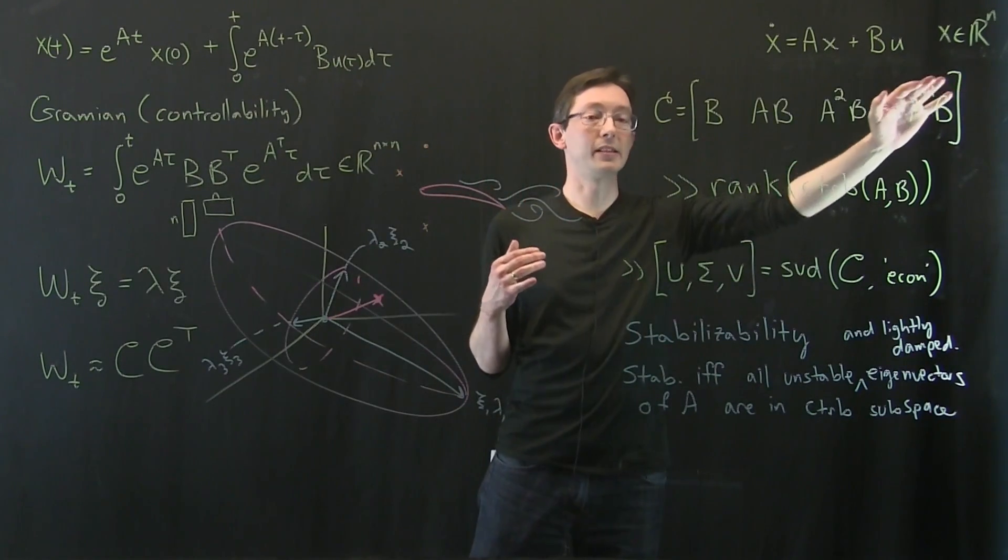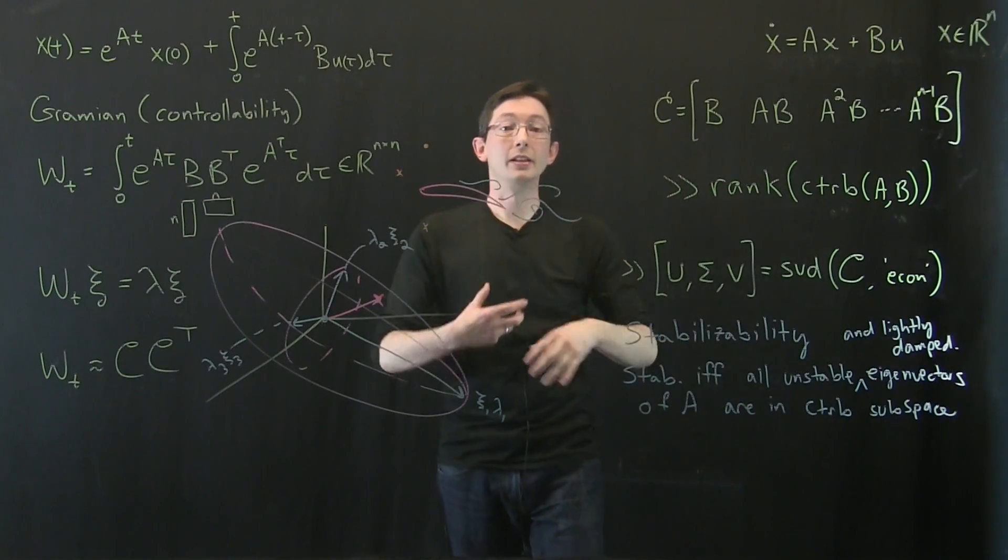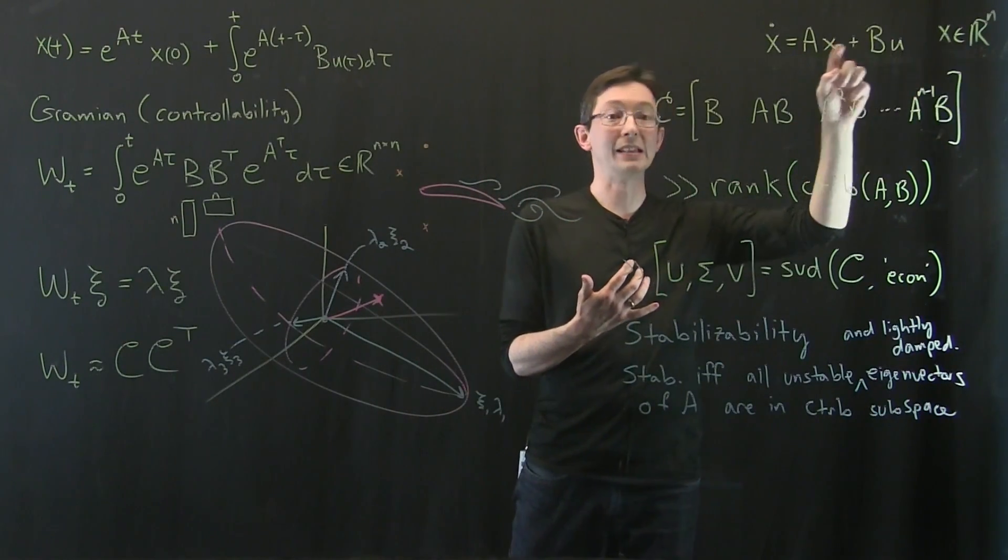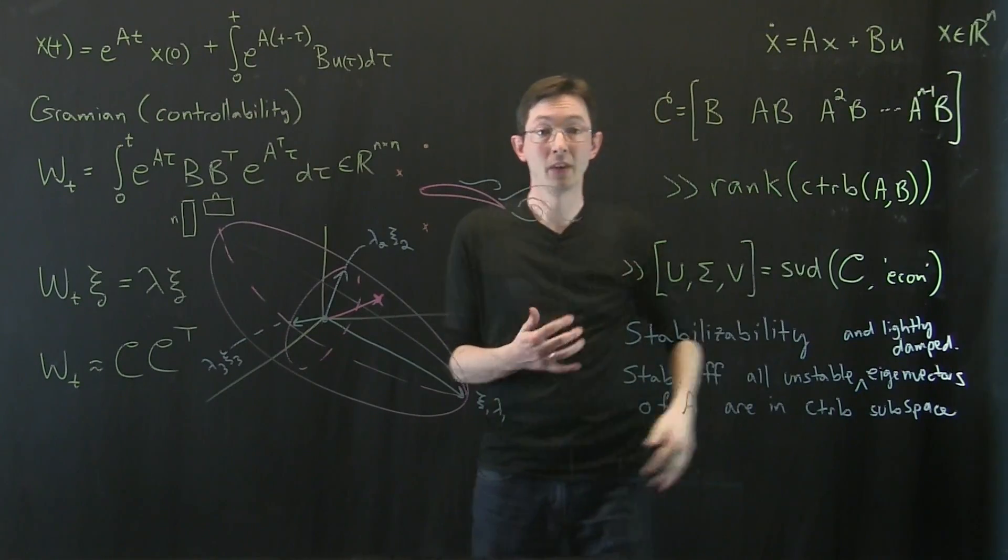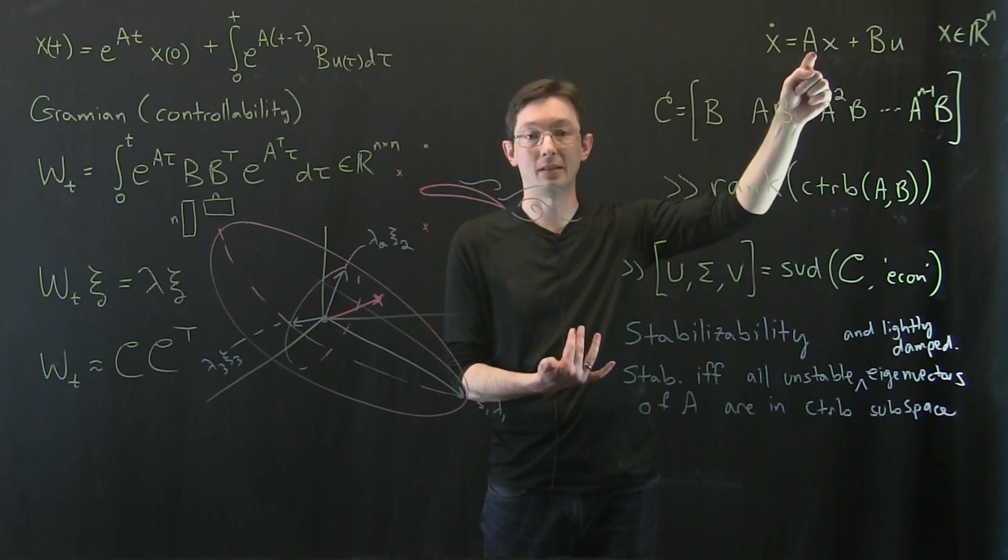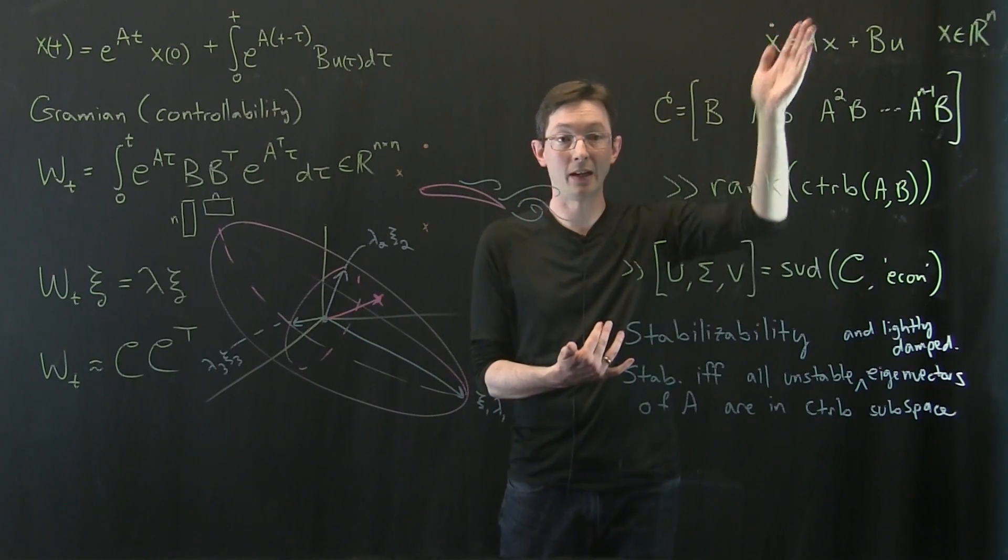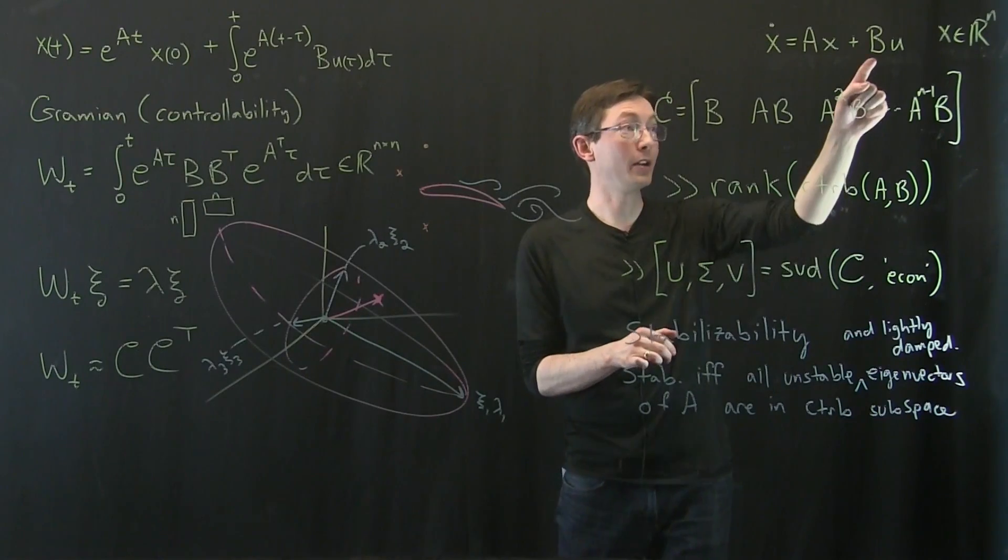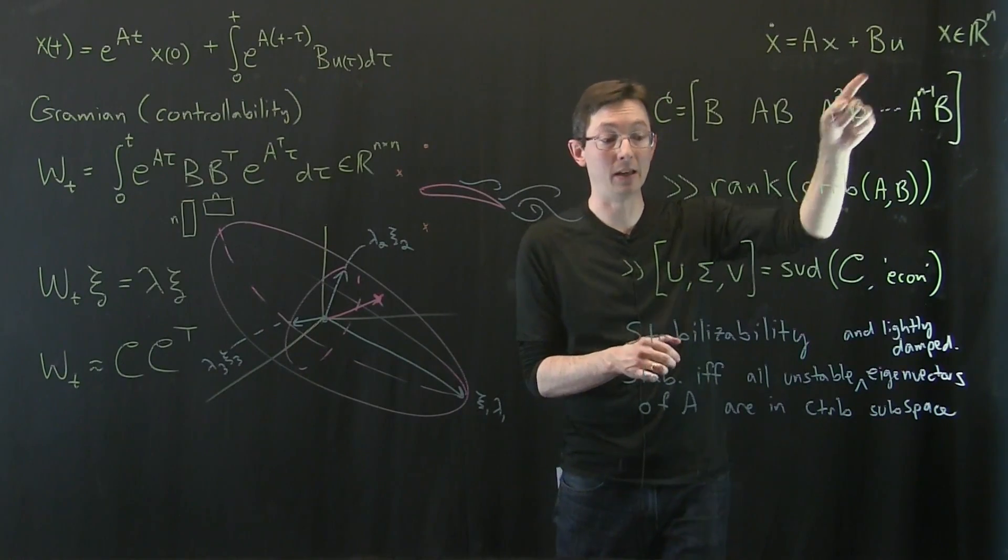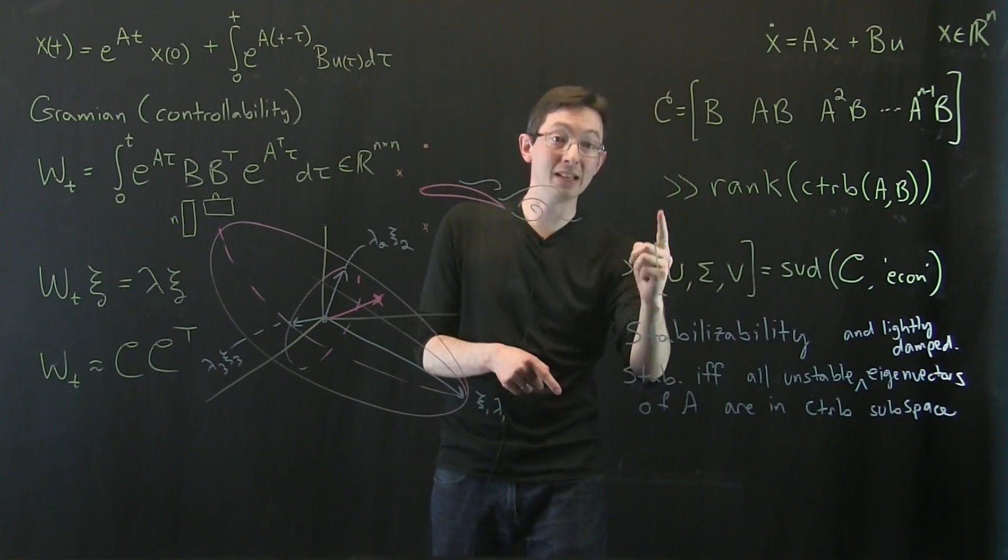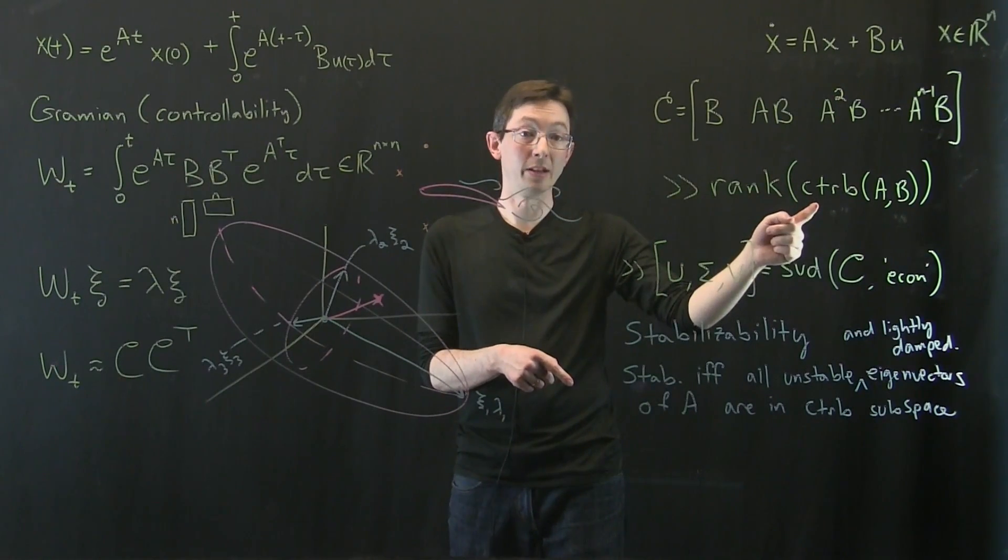So in really high dimensional systems, again, we're looking at degrees of controllability and we're looking at degrees of controllability in special directions in Rn. So if there is an unstable eigenvector of A or a very lightly damped eigenvector with a lightly damped eigenvalue, I really want that to be highly controllable. So I want to choose my actuators B so that the unstable dynamic directions correspond to big singular vectors of this controllability matrix.